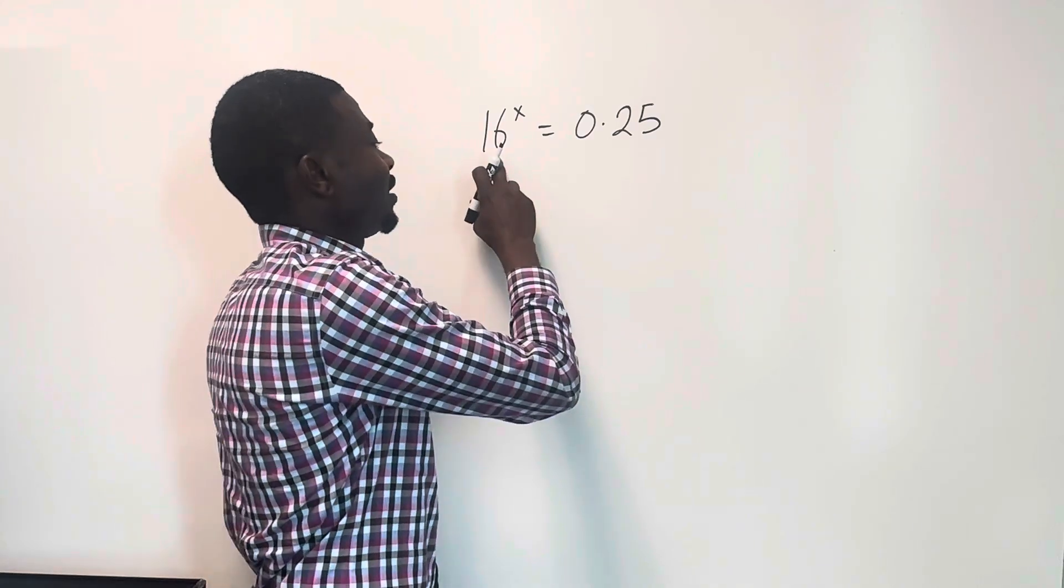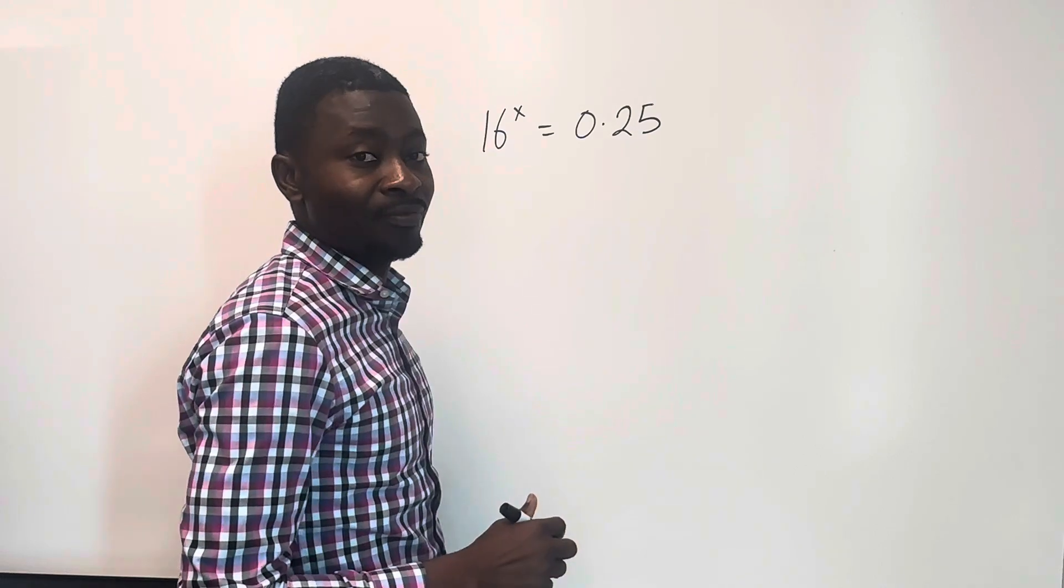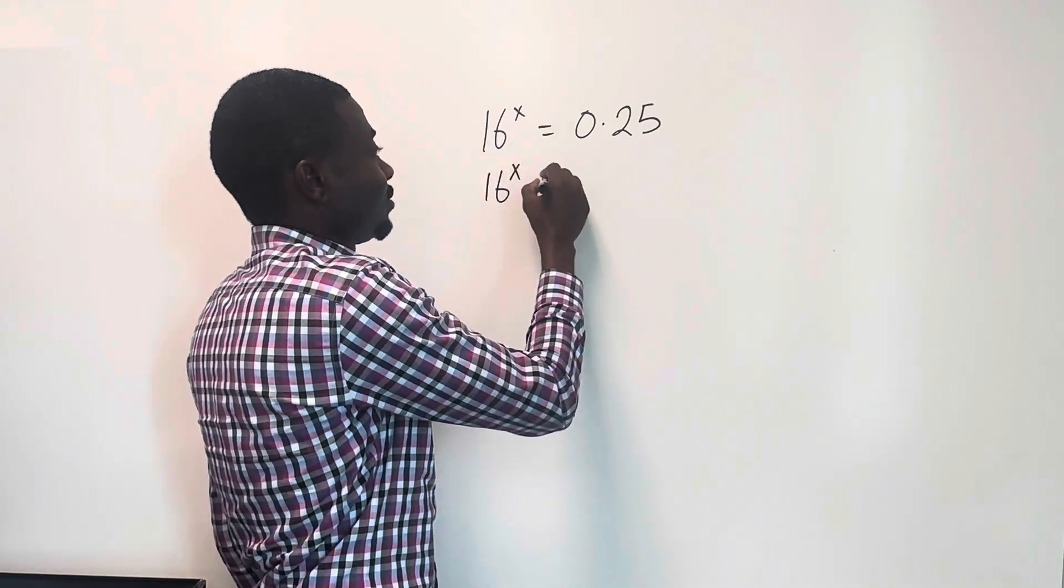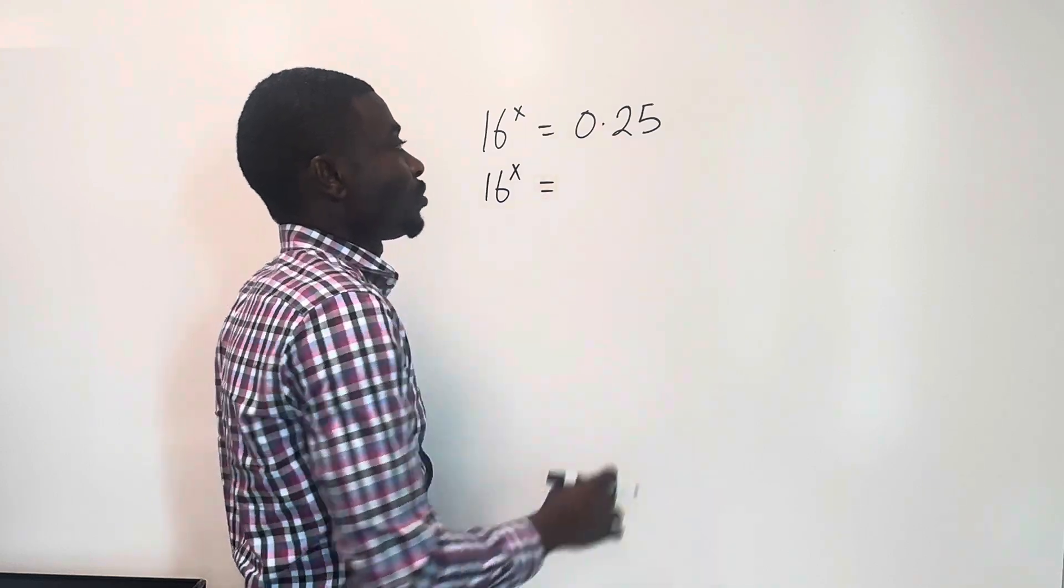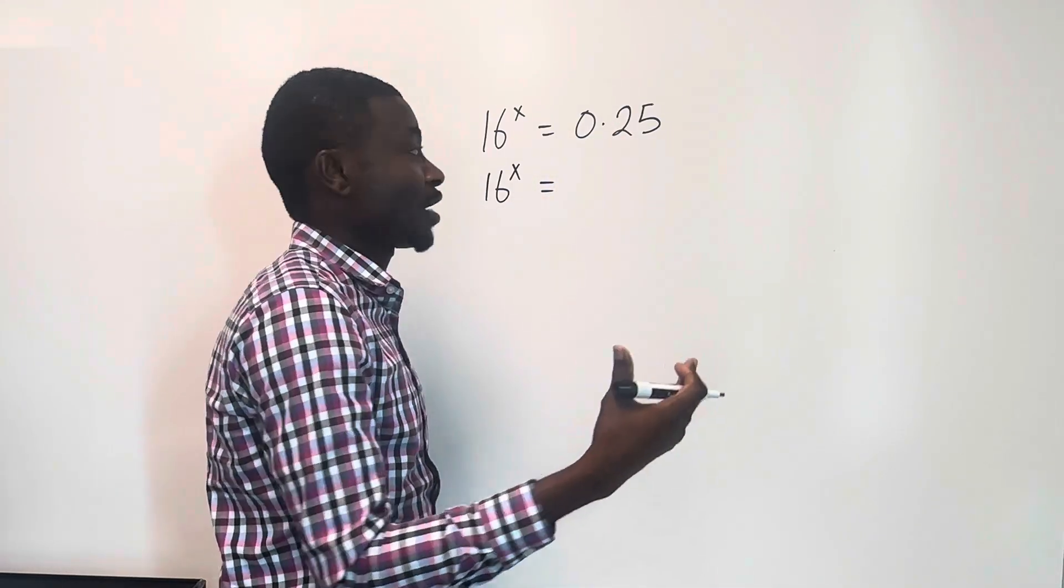So we're having 16. This 16. 16 raised to the power of x is equal to 0.25. So what do we do? We repeat this. This is 16 raised to the power of x. Now, this is 0.25. Our job here, we're going to change this to a fraction.